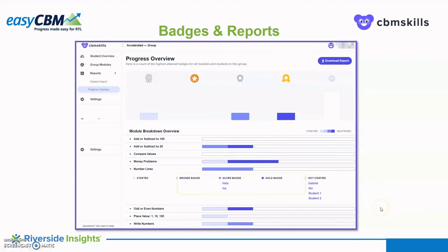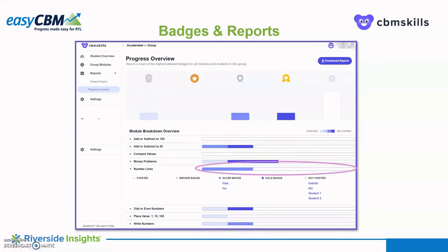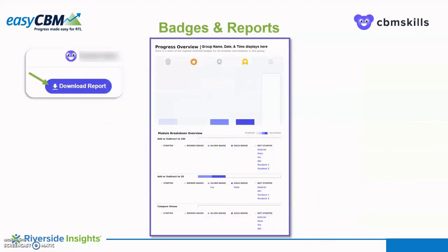Looking at the number lines module, for instance, two students earned a silver badge, while four students have not yet begun the module. The bars along the top for each module match the colors indicated in each column. The two students earning a silver badge are indicated in this first bar, and those students who have not yet begun the module are indicated in this white bar. Click the Download Report option in the upper right corner of the screen to view and print a PDF of the Progress Overview Report.